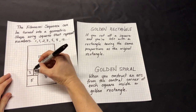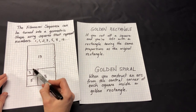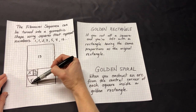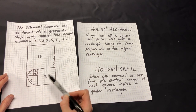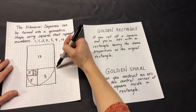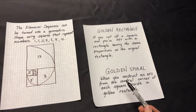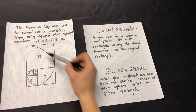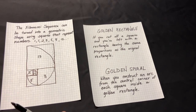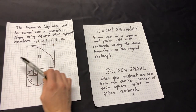Now what is a golden spiral? You construct an arc from the inside corner of each square to the opposite corner. Swing an arc, then from the next inside corner swing another arc, and keep going. If you smooth it out, that would be the golden spiral. You construct an arc from the inside corner of all of these, and you will find this in nature quite frequently — snails, sunflower pods, things like that.